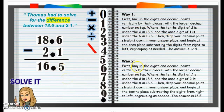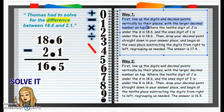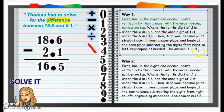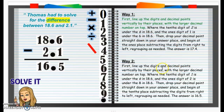Let's take a look at Way 1 and Way 2. Way 1 says: first, line up the digits and the decimal points vertically by their places with the larger decimal number on top. Yes, the larger decimal number on top — we lined them up. So I'm going to put that in green so that we know we got that right.